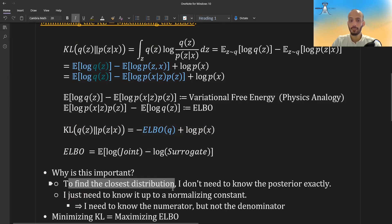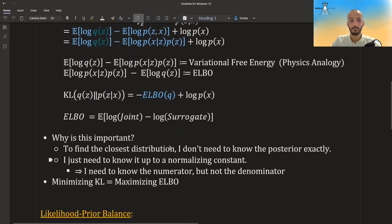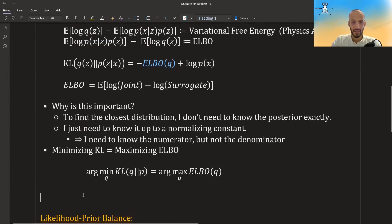That is great. This is why we need the ELBO. We don't have the exact posterior. We have it up to a normalizing constant. And so I only need to know the joint. I only need to know the numerator in the Bayes rule, not the denominator. And as you can see, when we want to minimize the KL with regards to Q, it's the same as maximizing the ELBO. Okay. And maybe it's better to also write it down. So the arg min of the KL is equal to the arg max of the ELBO. So we can just focus on maximizing the ELBO.